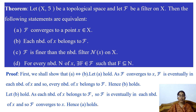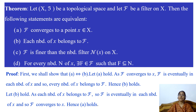Now we have a theorem: let (X, T) be a topological space and let F be a filter on X. Then the following statements are equivalent. Statement A: F converges to a point x in X. Statement B: each neighborhood of x belongs to filter F. Statement C: F is finer than the neighborhood filter N(x) on X. Statement D: for every neighborhood N of x, there exists a member F of filter F such that F is contained in N.